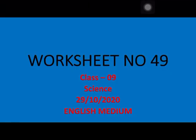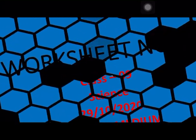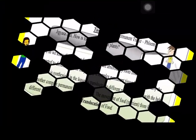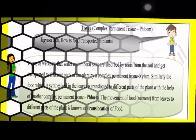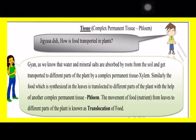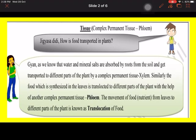Hello students, today we are going to discuss worksheet number 49, Class 9 Science, for the date 29th October. As you know that we have discussed xylem, today in the worksheet we will discuss about the phloem tissue.